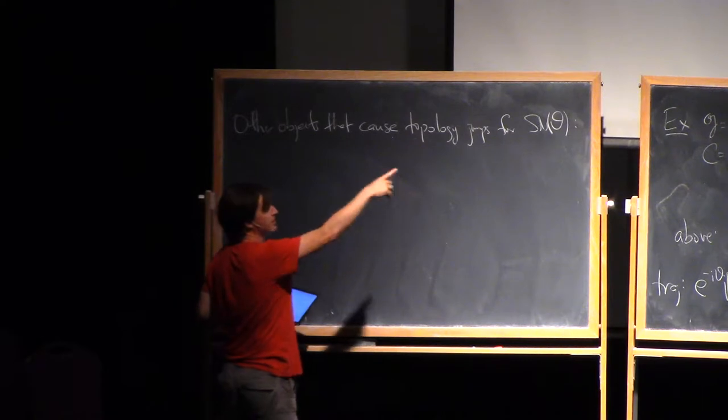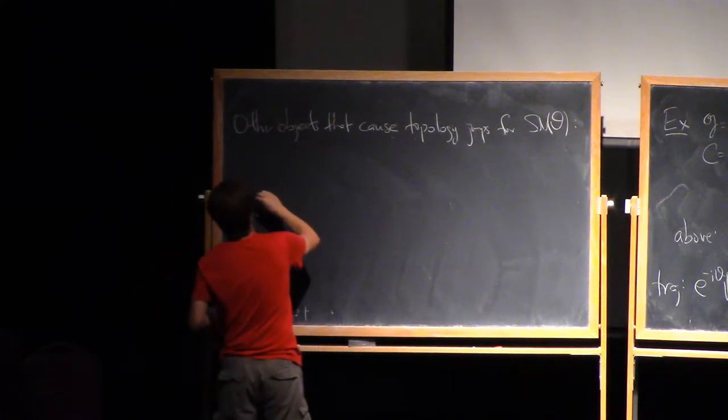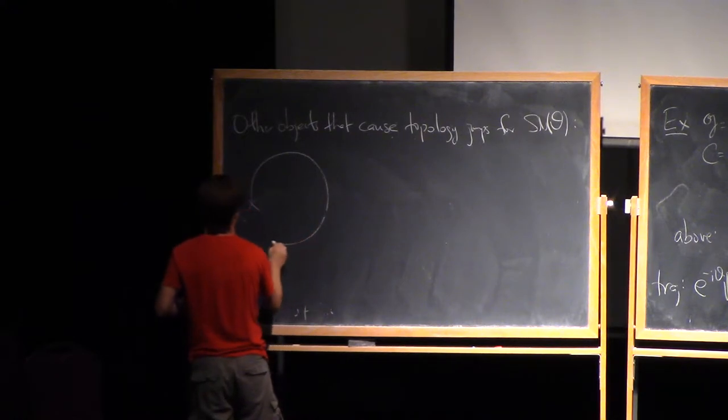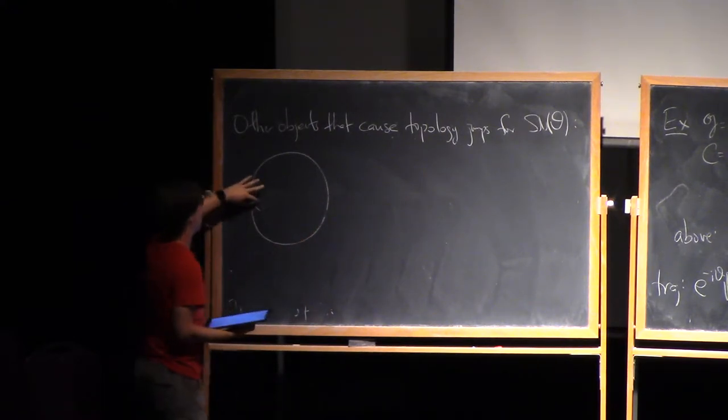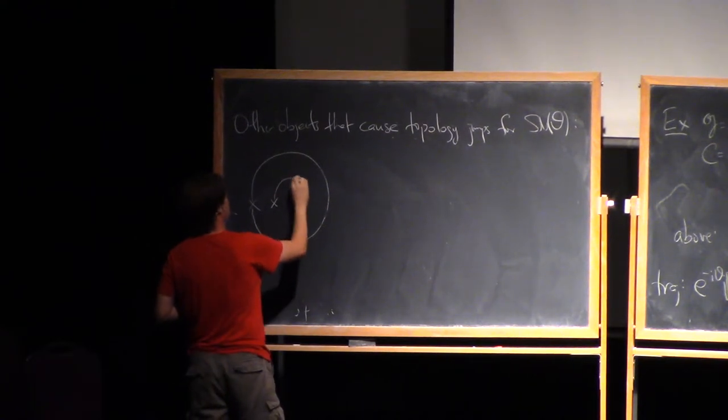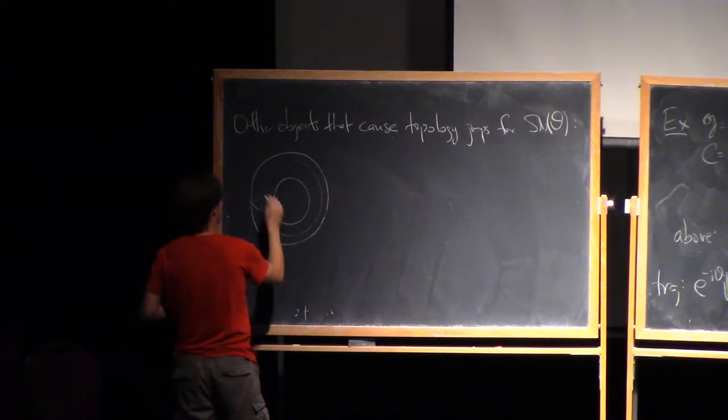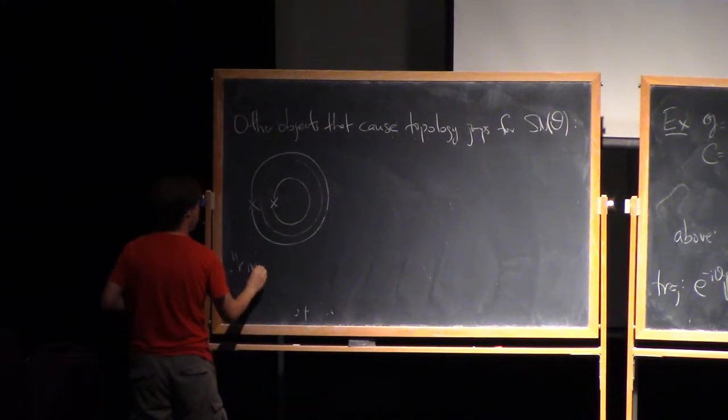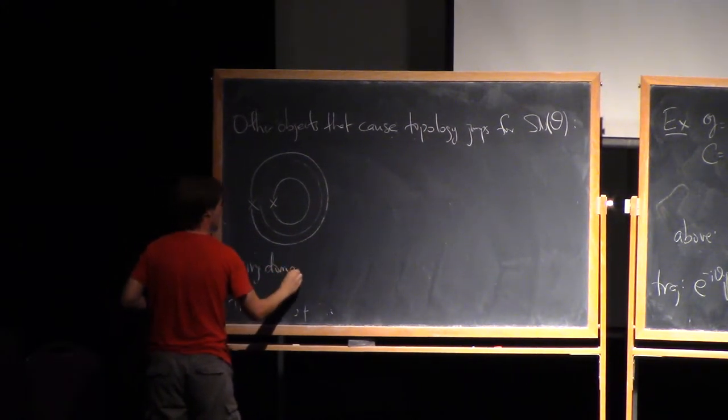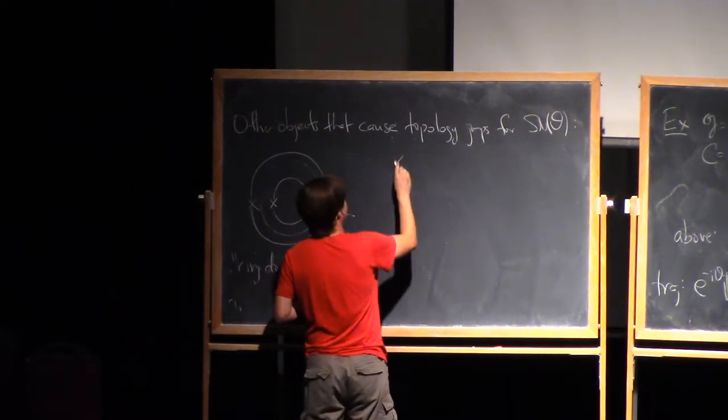So one that can happen already in this double-cover situation is you can have trajectories that actually go start at a branch point and end at the very same branch point. And when you get them, you actually get a ring of them. So you get something like this. So a whole family of closed trajectories. So let me call that a ring domain.